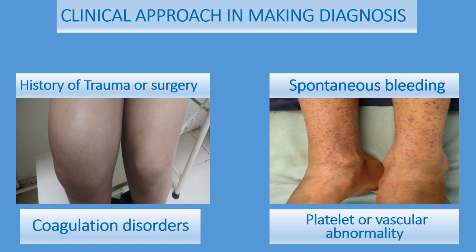We also have to ask about any drug history, because many drugs affect hemostasis — for example, aspirin, clopidogrel, and anticonvulsant drugs which we routinely prescribe to children, such as valproic acid, carbamazepine, and phenytoin. All these affect hemostasis. We also have to ask about family history and history of consanguineous marriages, because inherited or congenital disorders can be ruled out. This completes the clinical approach.